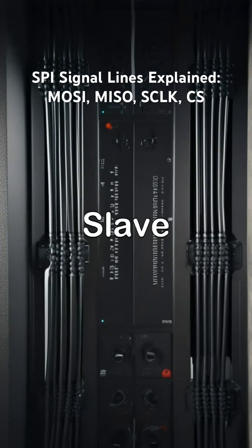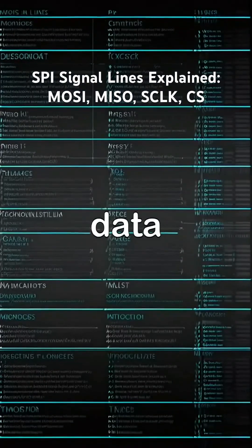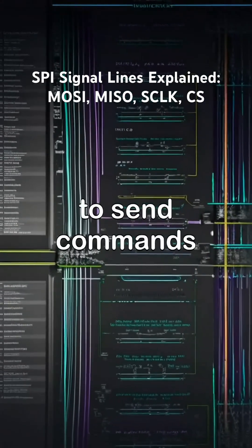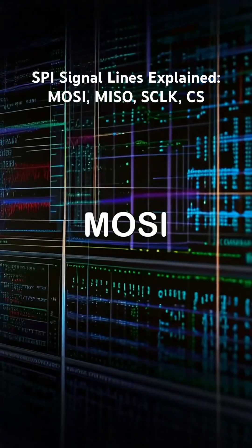MOSI, Master Out, Slave In. This line carries data from the master to the slave. Whatever the master wants to send, commands, addresses, or data, goes through MOSI.